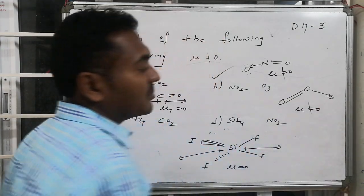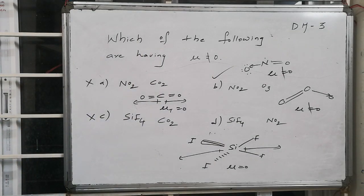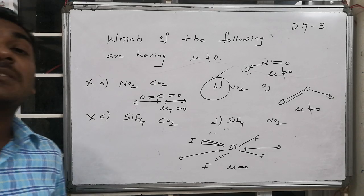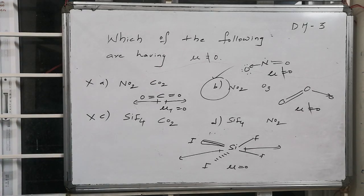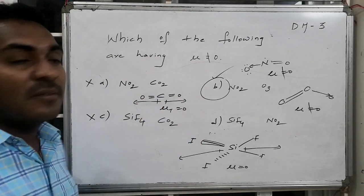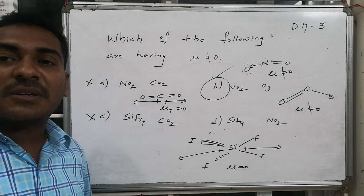Therefore, the set of compounds in the given options which are having two molecules with permanent dipole moment, μ not equal to zero, are NO₂ and ozone.